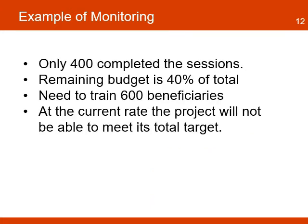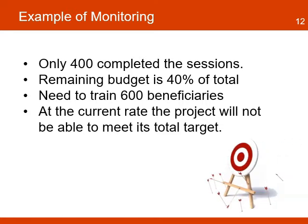After reviewing the project plans, the project manager looks at the monitoring data and learns that only 400 beneficiaries completed the training sessions — these are the outputs. The target is for 1,000 beneficiaries to complete the training sessions. The project manager also notices that the remaining budget is now only 40% of the total and will only be able to cover another 400 beneficiaries of the 600 needed to meet the planned targets. The project spent more budget to deliver fewer outputs than planned.